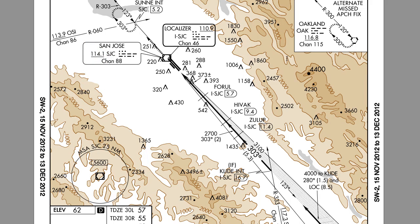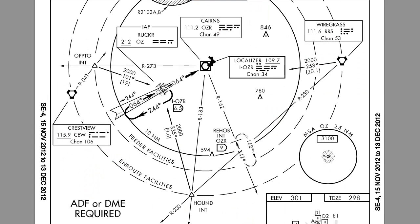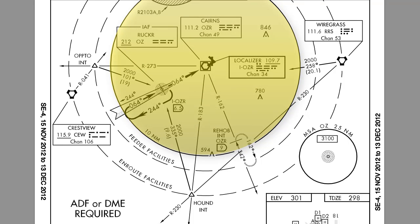The data on the plan view is always drawn to scale, unless there are concentric rings on the approach chart, such as in this approach procedure here. When there are concentric rings, only the data within the 10-mile ring in the center is to scale.